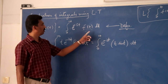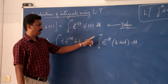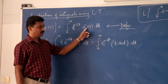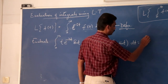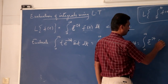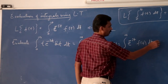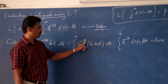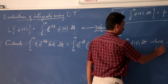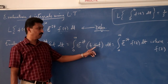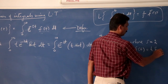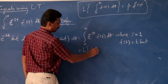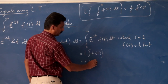Comparing this integral with the definition of the Laplace transform, the exponential term is e^(−2t), which matches e^(−st) when s = 2, and f(t) must equal t·sin t. So this integral equals the Laplace transform of t·sin t evaluated at s = 2.